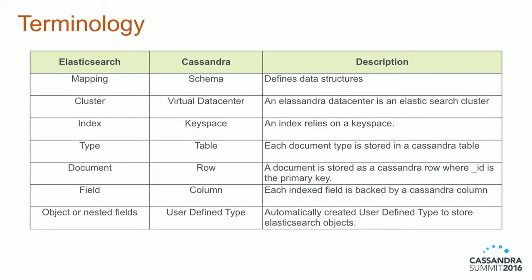Let's see how we map concepts from Elasticsearch to Cassandra. The Elasticsearch mapping is like the CQL schema. Where you have many virtual data centers in a Cassandra cluster, an Elasticsearch cluster is mapped to only one data center. An Elasticsearch index is mapped to a keyspace, and each document type is backed by a Cassandra table. An Elasticsearch document is stored as a row in a Cassandra table, and each field of that document is a column in the CQL schema. For nested objects, we use user-defined types.